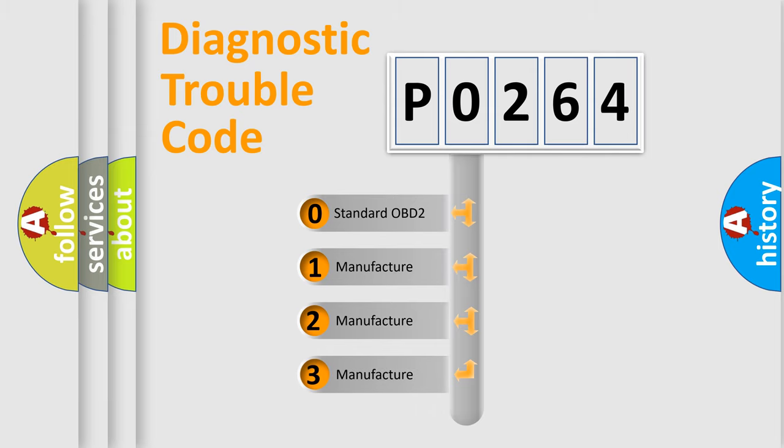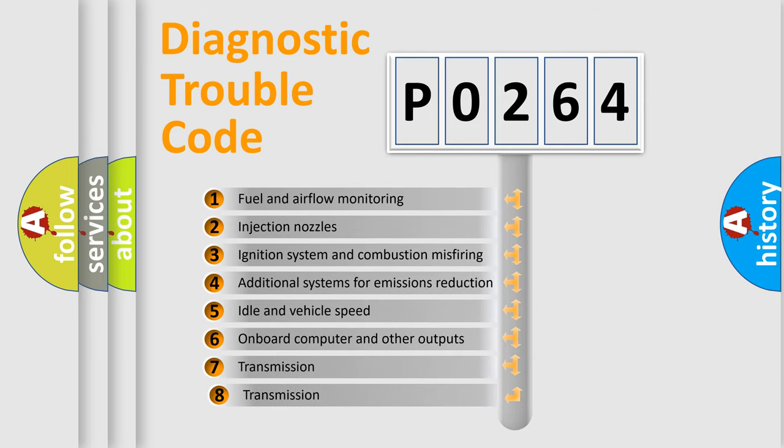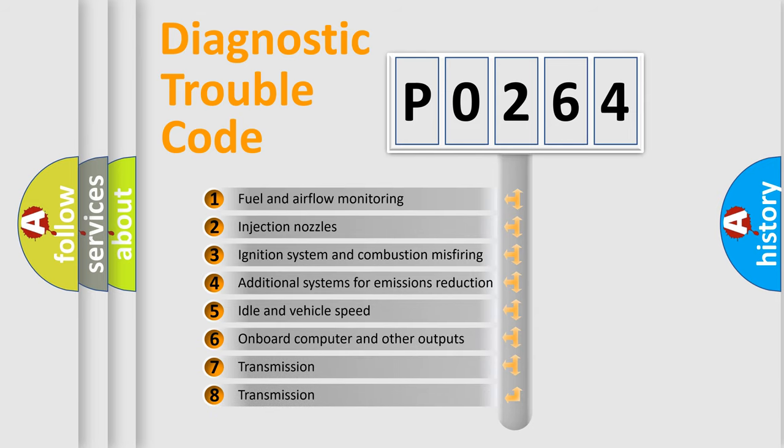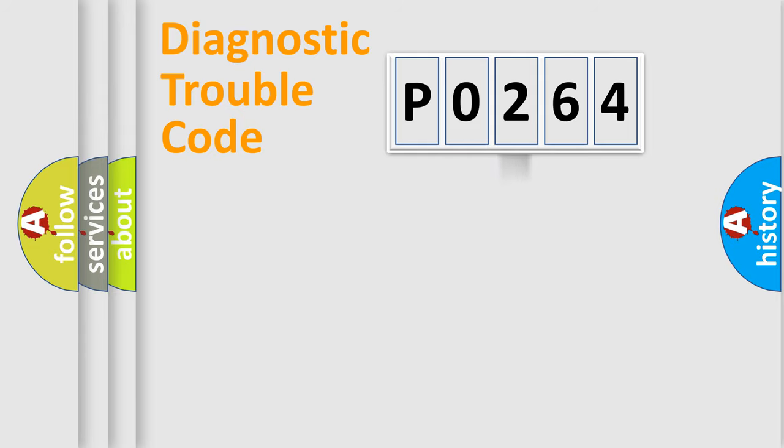If the second character is expressed as zero, it is a standardized error. In the case of numbers 1, 2, 3, it is a more specific expression of a car-specific error. The third character specifies a subset of errors. The distribution shown is valid only for the standardized DTC code.